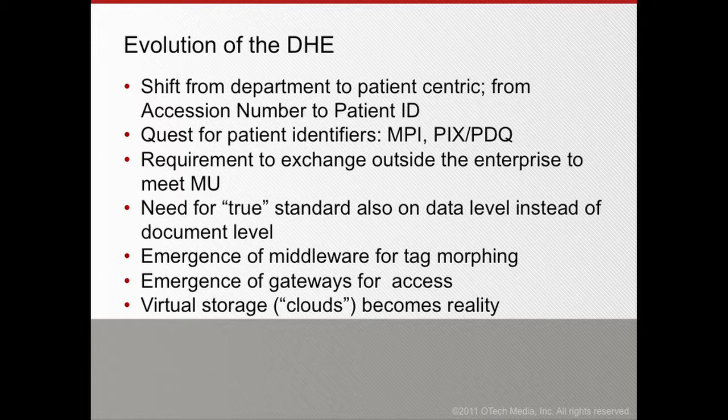For example, some PACS systems and viewers depend on certain information in the series description to enable certain hanging protocols at the workstation. Other systems might require a different series description, body part description, or procedure codes. So it is not unusual that we need to do tag morphing — changing some of the information to make sure the workflow is optimally supported in the subsequent systems.